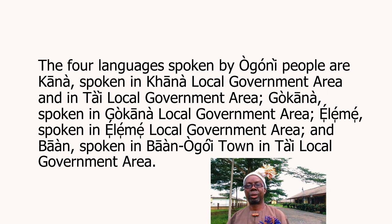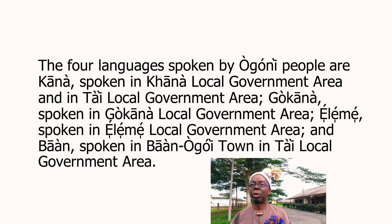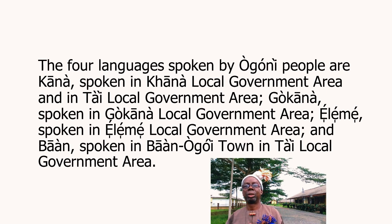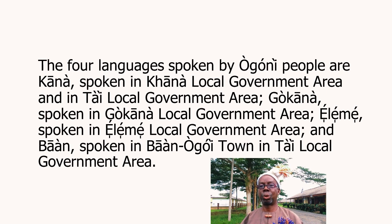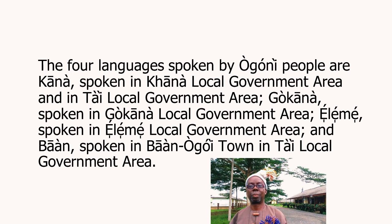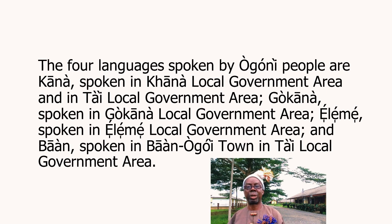The next one is Gokana. Gokana language is spoken in Gokana, Dokogome area in Ogoniland, Rivers State. Then the third one is Eneme. Eneme is spoken in Eneme, Dokogome area in Ogoniland, Rivers State. And number four is Ban Ogoi. Ban Ogoi is spoken in a community, a town called Ban Ogoi town in Thai, Dokogome area in Ogoniland, Rivers State.